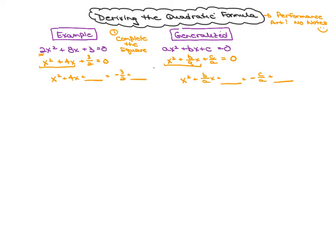Time to complete the square. I'm going to take b — which is four in the example — divide that by two, and square it. Four divided by two is two; squaring it gives me four. Whatever I add to one side, I add to the other, and I'll write it with a common denominator, so four is the same as eight halves. Over on the generalized version, I take b/a and divide by two, giving me b over 2a, then square it to get b squared over 4a squared.